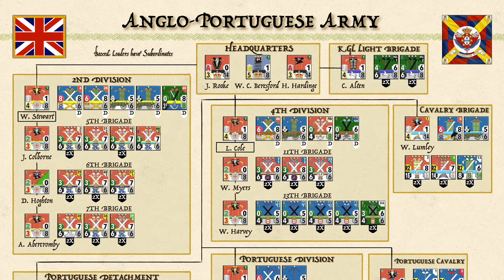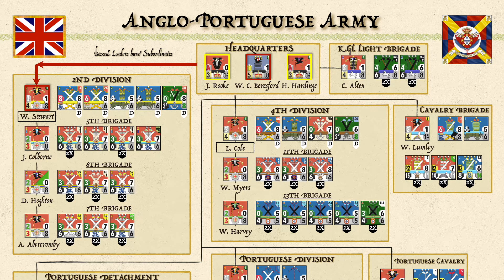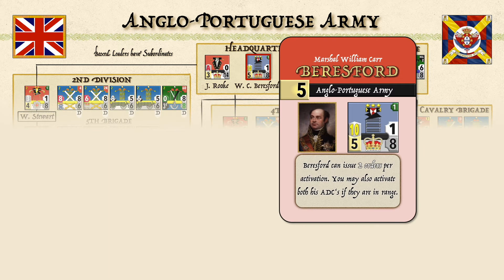Let's take a look at the order of battle of the Anglo-Portuguese army at Albuera. You can see at the center of the screen the headquarters box with the army commander Beresford, accompanied by his two aides-de-camp. Subordinate leaders can be found by following the lines to the next boxes — for example, the Second Division leader Stuart is directly subordinate to Beresford. Under Stuart you find brigade leaders Colborne, Hutton, and Abercrombie.